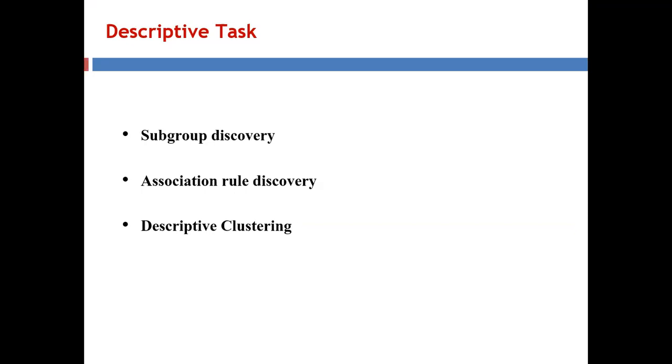Now let us talk about the descriptive tasks. The first is subgroup discovery, which attempts to search for relations between different properties or variables of a dataset with respect to a target. In subgroup discovery, relations are represented through rules. For example: if the number of lines of compilations is greater than 100 and the complexity of the program is greater than 4, then we declare the code as defective; otherwise, the code is not defective.